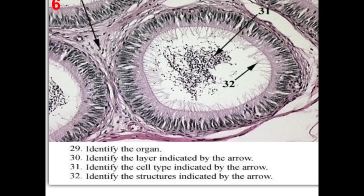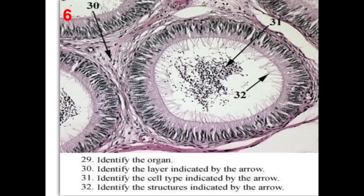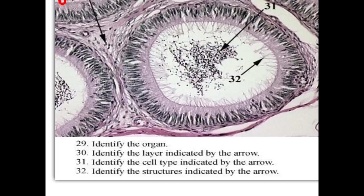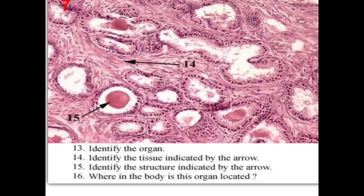Identify the organ: it is formed of sections with a lumen lined by pseudostratified columnar ciliated with stereocilia containing sperms inside — so this is the epididymis. The layer outside is adventitia. The cell type inside is spermatozoa. The stereocilia increase surface area for exchange between the cell and the lumen contents, as these cells are responsible for secretion and absorption.